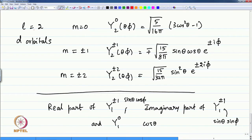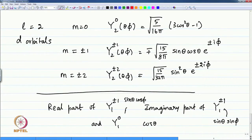The d orbitals correspond to the quantum number l with a value 2, and there are 5 d orbitals with the quantum number m being 0, or plus/minus 1, or plus/minus 2, and the spherical harmonics are a second rank tensor with the spherical component 0. The spherical harmonics Y(l,m) are also referred to by their tensorial rank. These are second rank tensor representations in a spherical coordinate system with the component being 0 or plus/minus 1 or plus/minus 2.